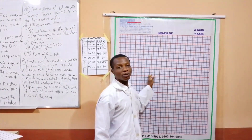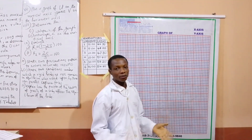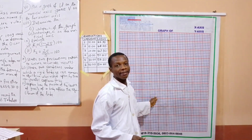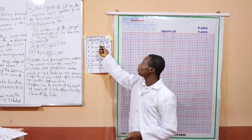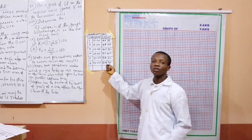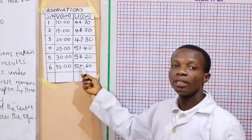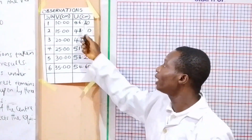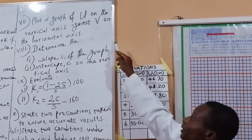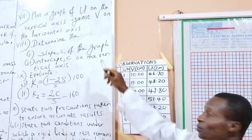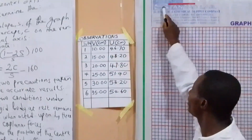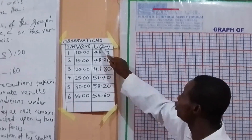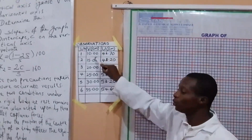Welcome to part 2 of the video. I told you I was going to plot the graph, so that's what I'm going to do right now. We are to plot the graph for the readings, for the observations we got in part 1. So these are the readings we got in part 1. We are to plot the graph of U on the vertical axis against B on the horizontal axis.